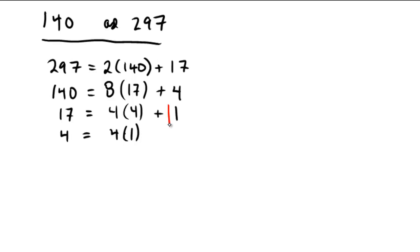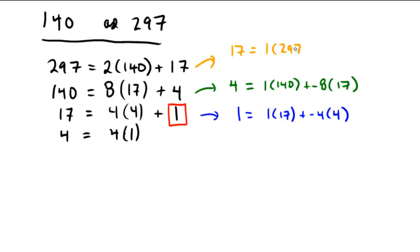And then finally, the 4 with the 1 would just be 4 times 1. So that's done. 1 is the GCD. So 140 and 297 are relatively prime. From this line right here, we can now say that 1 would be equal to 1 copy of 17 plus negative 4 copies of 4. This line here would give me that 4 is equal to 1 copy of 140 plus negative 8 copies of 17. And this line right here would give me that 17 is equal to 1 copy of 297 plus negative 2 copies of 140.